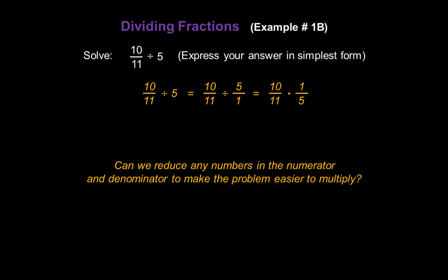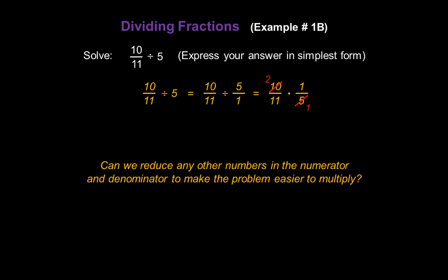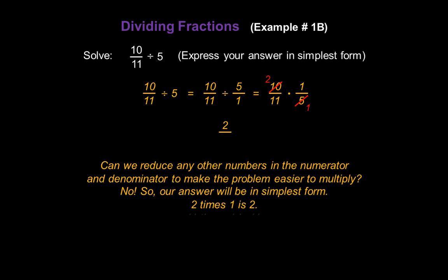Now that we have a multiplication problem, can we reduce any numbers? In fact, we can. 10 and 5 have a common factor of 5. So 10 divided by 5 changes the 10 to a 2, and 5 divided by 5 changes the 5 to a 1. There's nothing else to reduce, so our answer will be in simplest form. 2 times 1 gives us a numerator of 2, and 11 times 1 gives us a denominator of 11. So our answer is 2 elevenths.